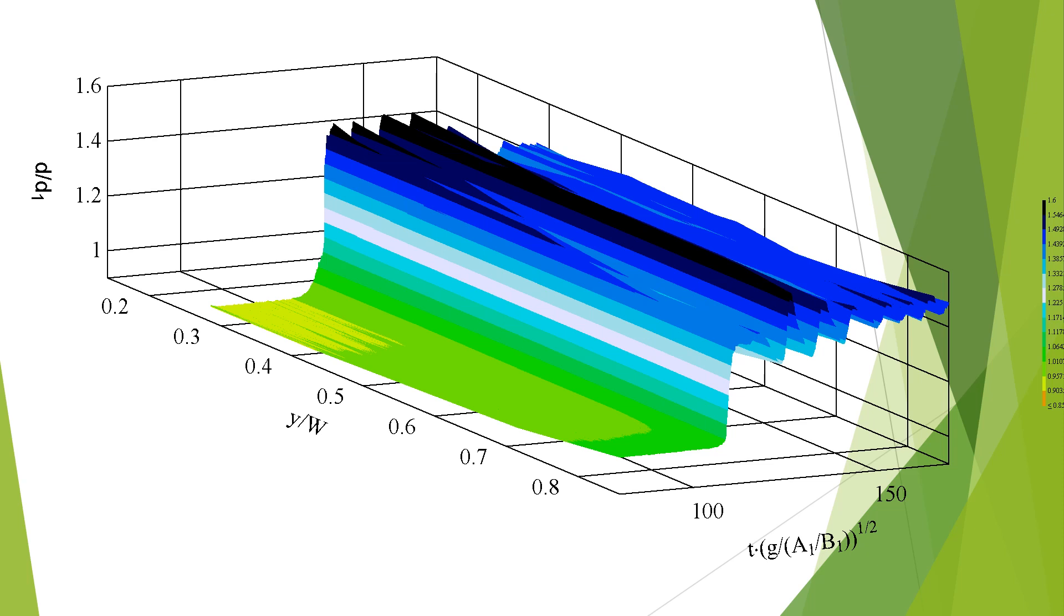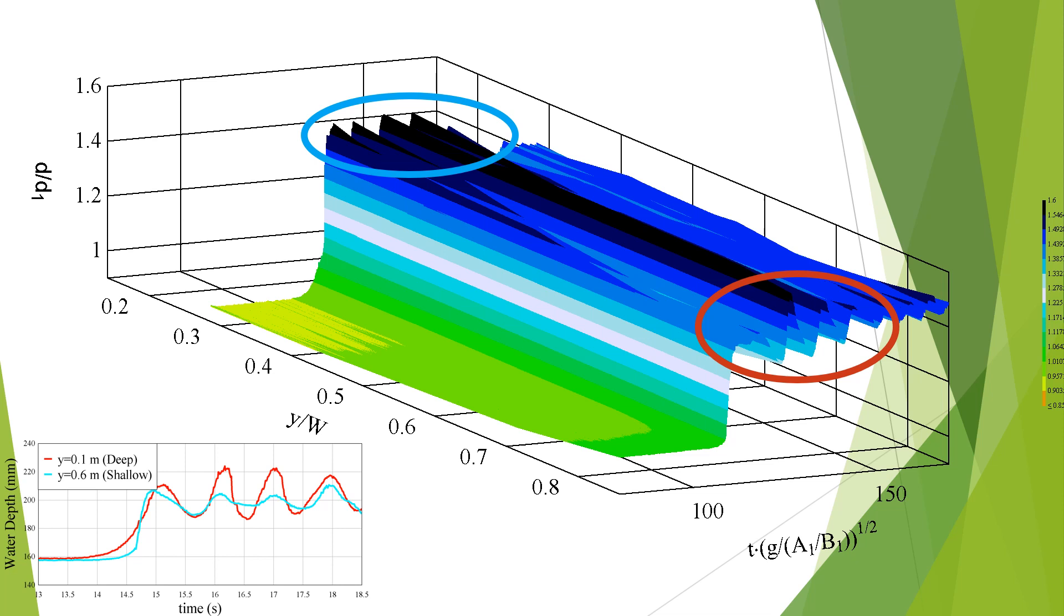All free surface profiles generally showed some degree of undulating motion. Asymmetry between the shallow and deep sections was clearly identified, where the amplitude decreased with flow depth. The initial rolloff was also highly energetic and displayed wave properties differing from the undulations afterwards.